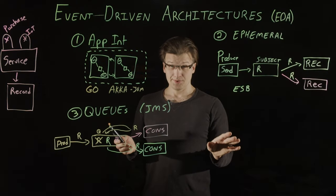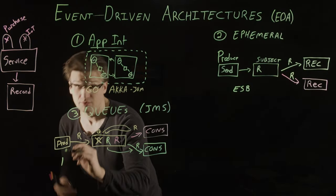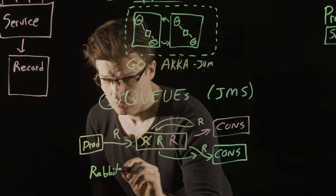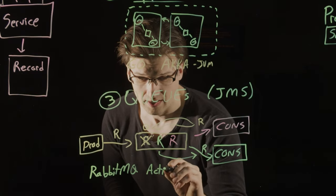Two popular examples of brokers that implement queues include, but of course are not limited to, RabbitMQ and ActiveMQ.